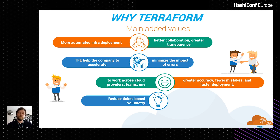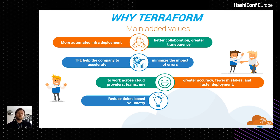This results in fewer mistakes and faster deployment. Globally, we can say these are examples of how Terraform features — such as built-in automation, VCS, and Teams management — allow IT teams to focus on business-related work.